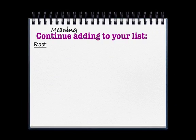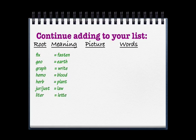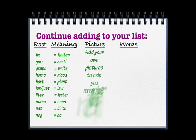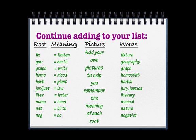Now we are going to continue adding to your list. You have your roots, your meaning, and then you add your own pictures and words. Here are some examples for you — you can put them on your chart if you want to pause the video. For the picture, you just add your own pictures, whatever helps you remember. For 'fix,' maybe there's a hammer or tape — whatever helps you to remember each of these words.